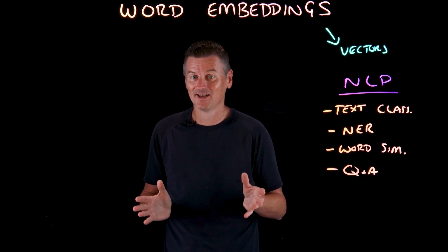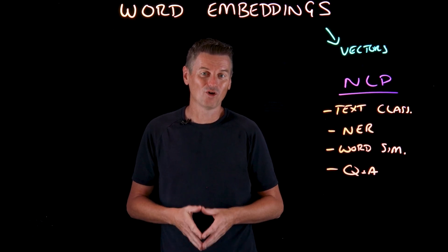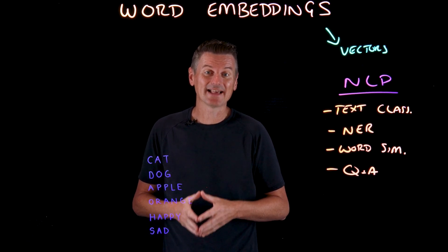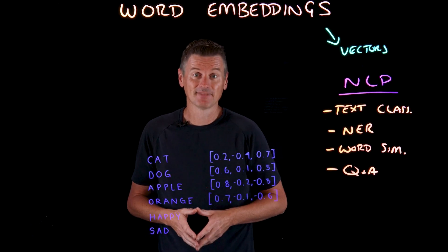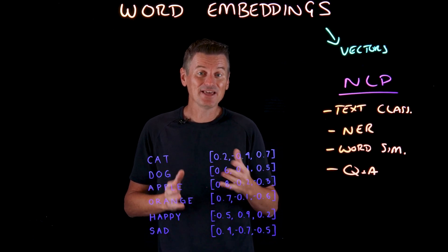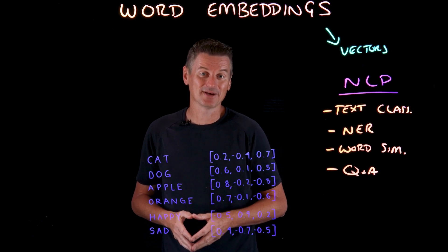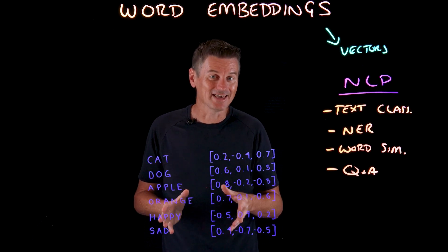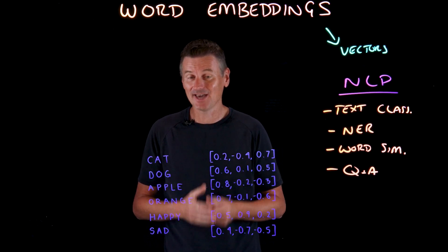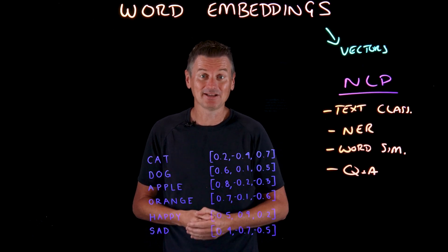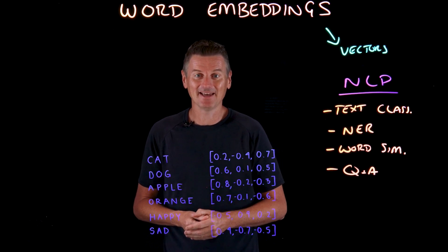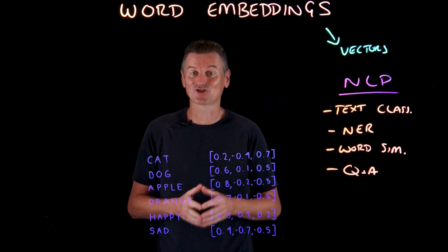So what does this look like? Let's start with a super small corpus of just six words. We'll represent each word as a three-dimensional vector, where each dimension has a numeric value creating a unique vector for each word. These values represent the word's position in a continuous three-dimensional vector space. If you look closely, you can see that words with similar meanings or contexts have similar vector representations. For instance, the vectors for apple and orange are close together, reflecting their semantic relationship. Likewise, the vectors for happy and sad have opposite directions, indicating their contrasting meanings.